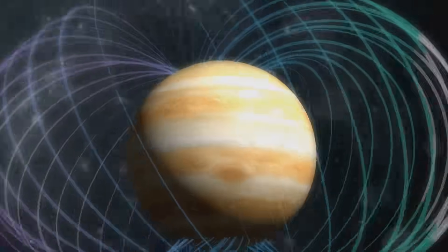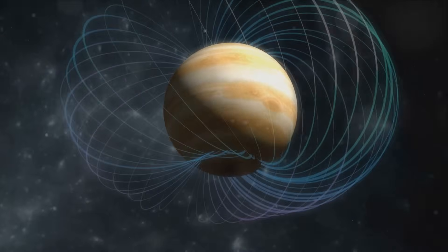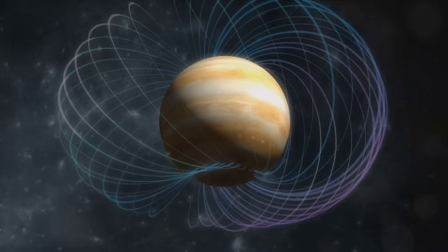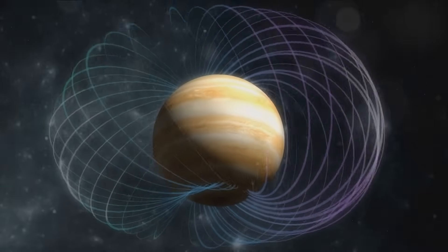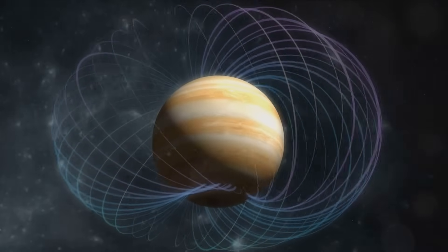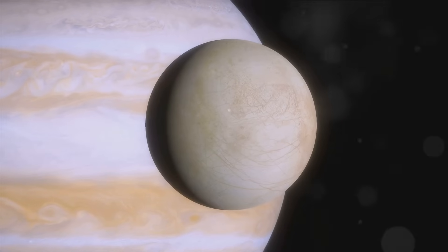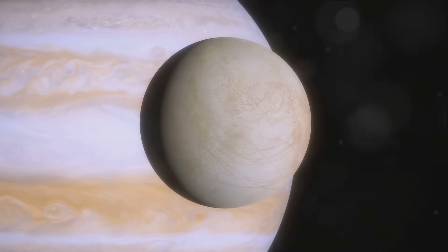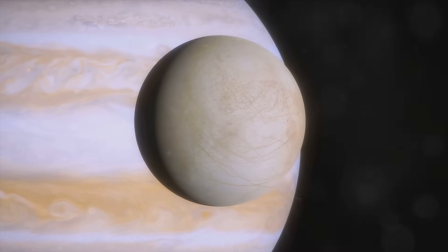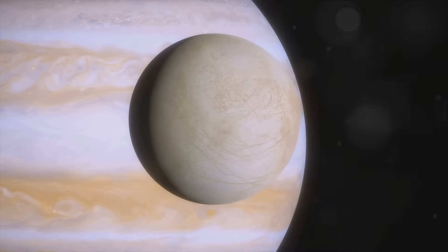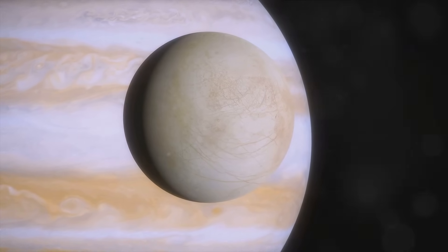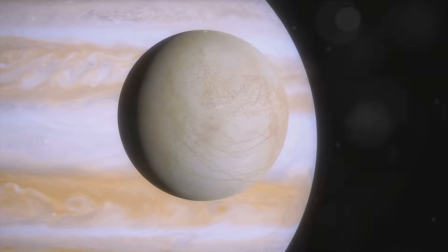But Jupiter isn't just a giant ball of gas and storms. It also boasts an incredibly powerful magnetosphere, the area around a planet that's controlled by its magnetic field. Jupiter's magnetosphere is the largest in our solar system, extending millions of miles behind the planet. It's so powerful in fact that it helps create stunning auroras, much like the northern and southern lights here on Earth.